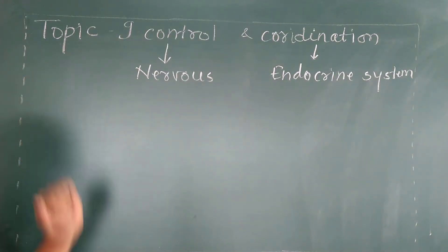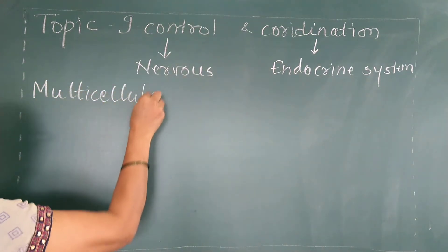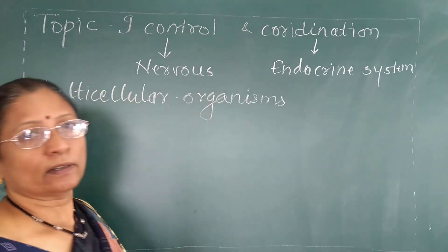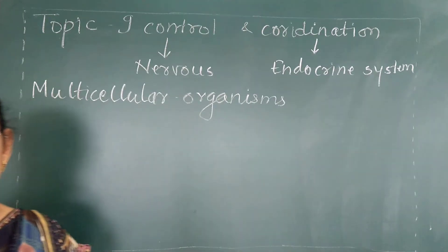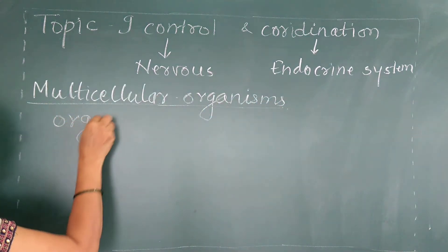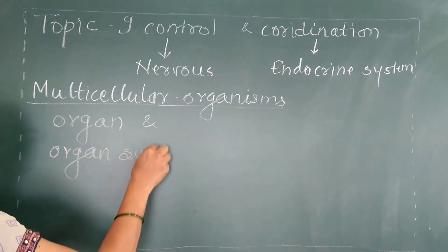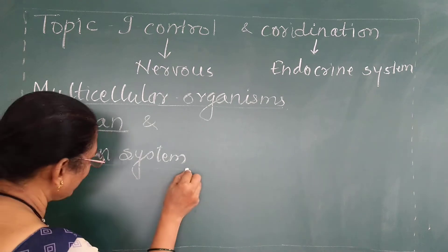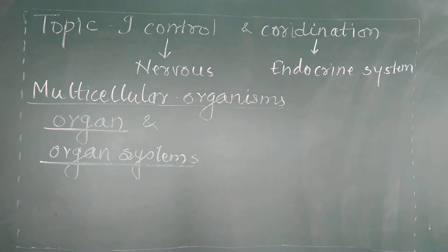In case of multicellular organisms, which are made up of many cells where cellular tissue, organ and organ system organization is there, the organs require their own controls. And when many systems work together, coordination between the systems is required.